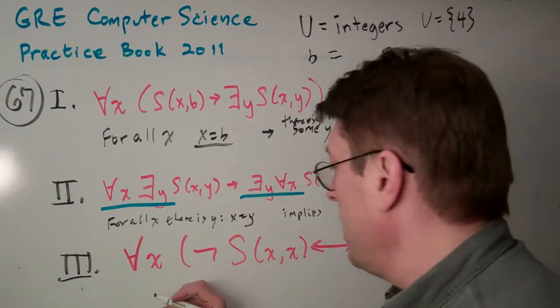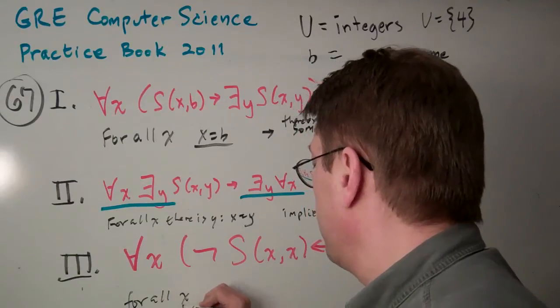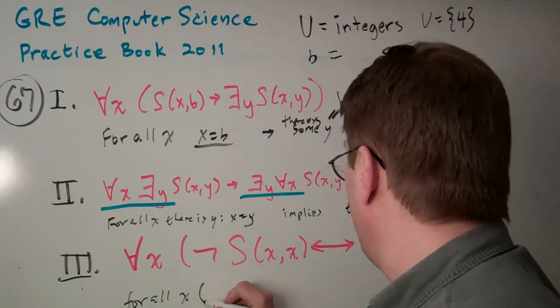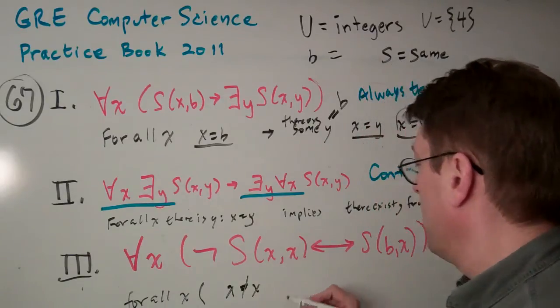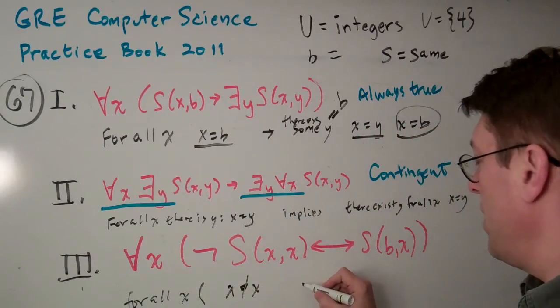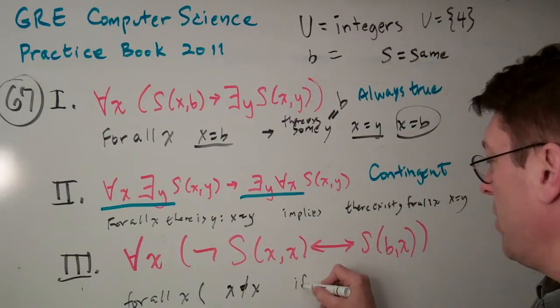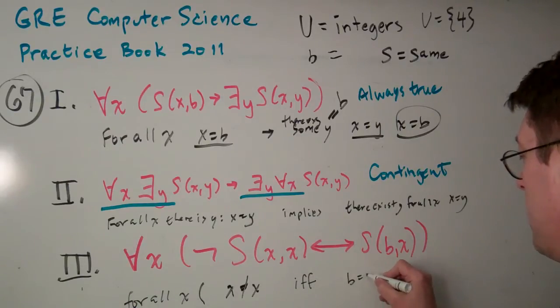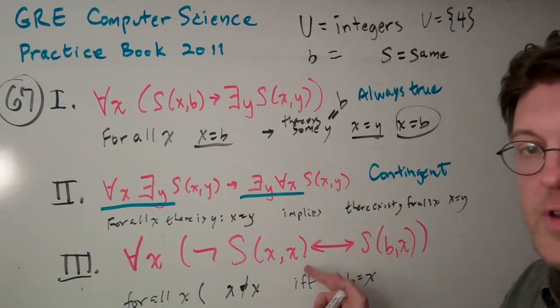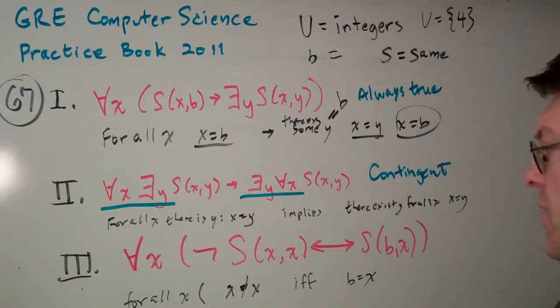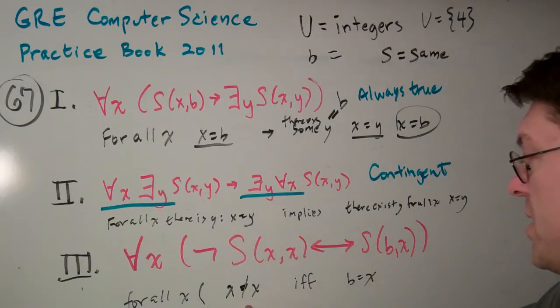Now, for this one here, it's for all X. X does not equal X. It is true if and only if B equals X. This means true if and only if, or implies that it's true if and only if. Now, that's just crazy. I mean, for all X, if X does not equal X, X has to equal X, right?